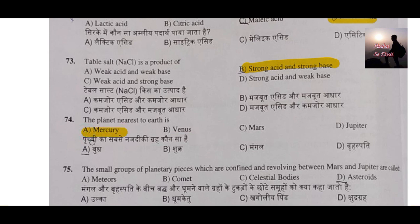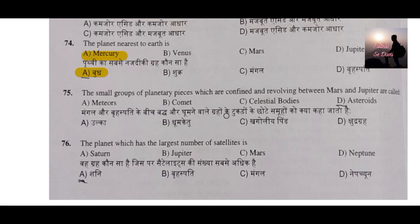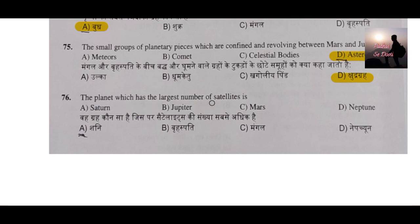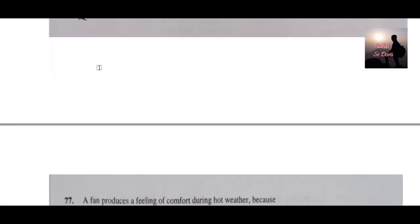Question number 74: The planet nearest to Earth is which one? It is Mercury, also called Budh Grah. Question number 75: A small group of planetary pieces revolving between Mars and Jupiter are called what? They are called asteroids, or shudr grah — remember this. Question number 76: The planet which has the largest number of satellites is which one? It is Saturn — Shani grah. Recently 20 more moons were discovered, making it the planet with the most satellites.